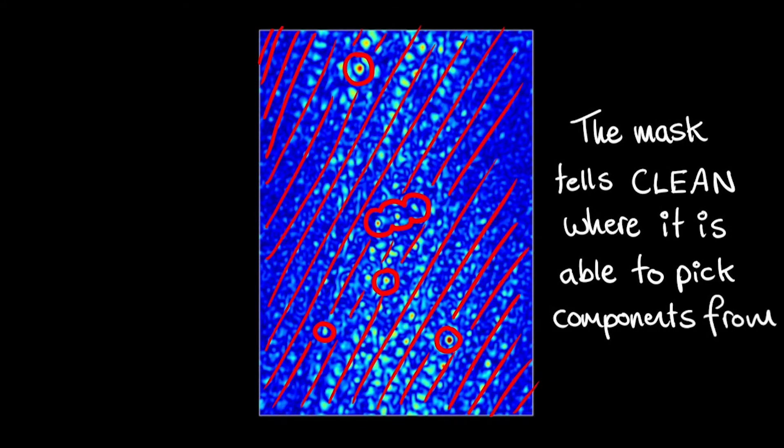Creating a clean mask allows you to restrict the area in the image where clean components will be fit, and thus to distinguish real astronomical emission from artifacts and noise.